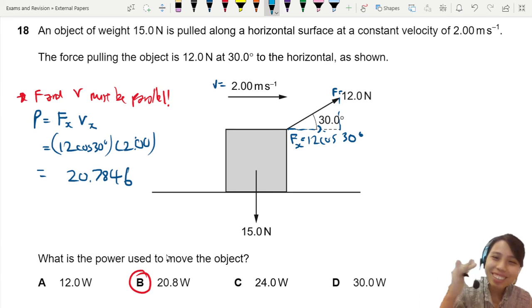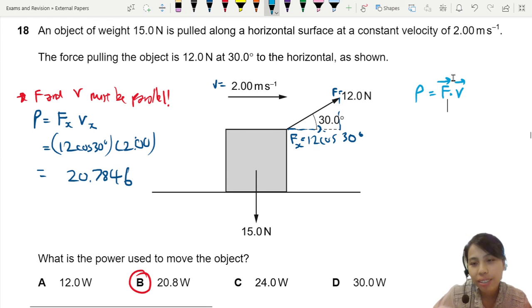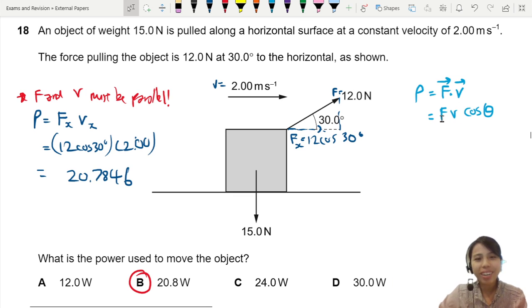The original equation for power is two vectors. Force is a vector, velocity is a vector, and they are multiplied together in a special way called the dot product. So the dot product already accounts for resolving the force. Here we have to manually resolve, right? But in mathematics, when you see the dot product, you just have FV cos theta. That's where the cos will come from. You already resolve.